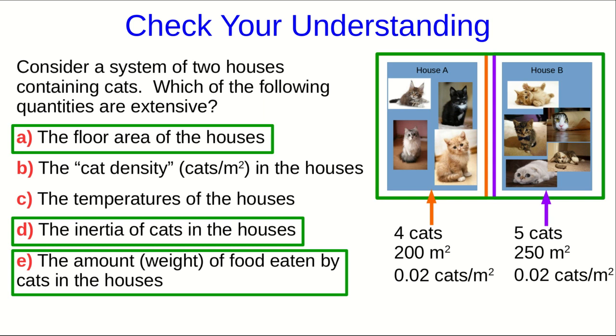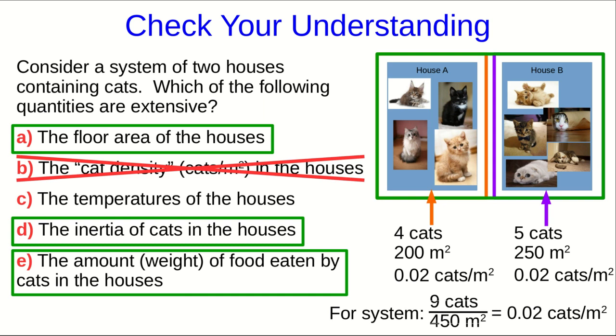Well, if this was extensive, then to get the total cat density for the system, we would add those together and get 0.04 cats per square meter. But that doesn't make any sense. For the system, we should take the total cats and divide by the total floor area of the houses. And that gets us 0.02 cats per square meter, not the sum of the two. So that's not extensive.